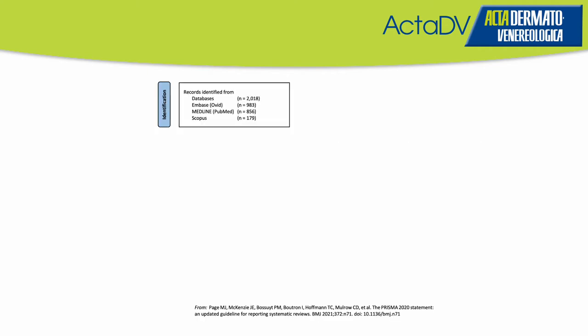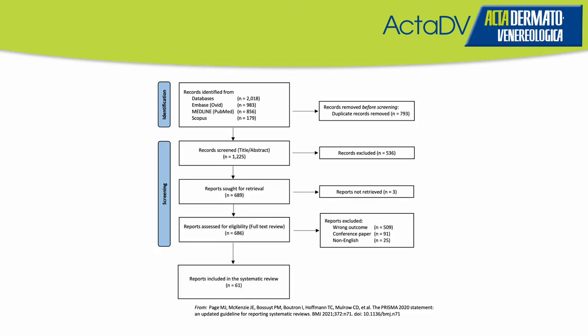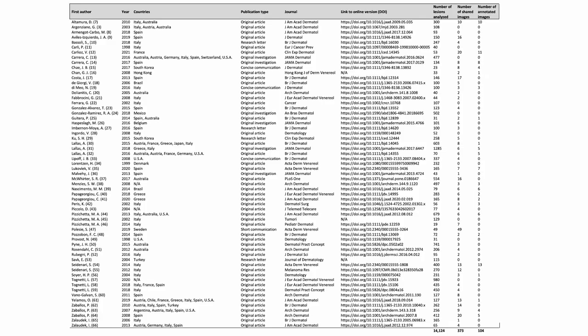As appropriate for systematic reviews, we adhered to the PRISMA checklist, and here you will find the PRISMA diagram. In the identification phase we identified a bit more than 2000 investigations. After the abstract and title screening and exclusion, we ended up with 61 investigations.